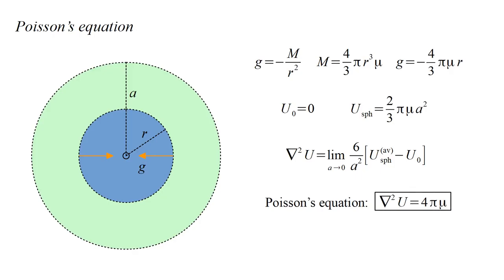The Laplacian of the potential equals four pi mu. If mu equals zero, this reduces to Laplace's equation. This is the equation we seek a relativistic version of.